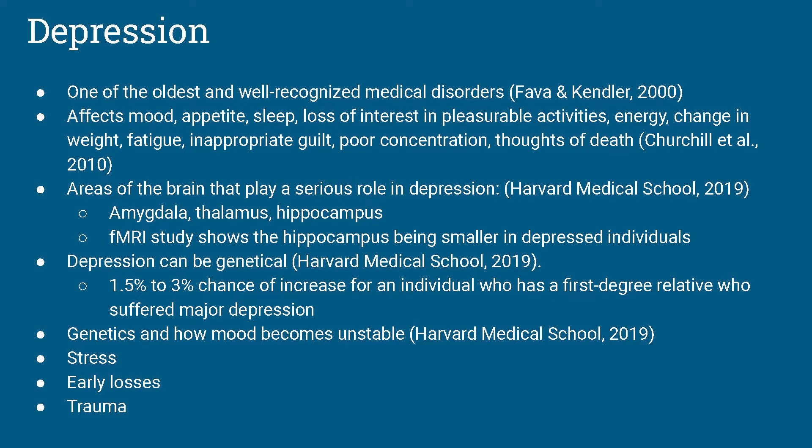Every part of the human body, including the brain, is controlled by genes. Genes make proteins that are involved in biological processes and throughout life, different genes turn on and off so that they can make the right proteins at the right time. But if the genes get it wrong, they can alter a person's biology in a way that results in mood becoming unstable. In a person who is genetically vulnerable to depression, any stress can push the system off balance. Early losses and trauma can also cause depression.